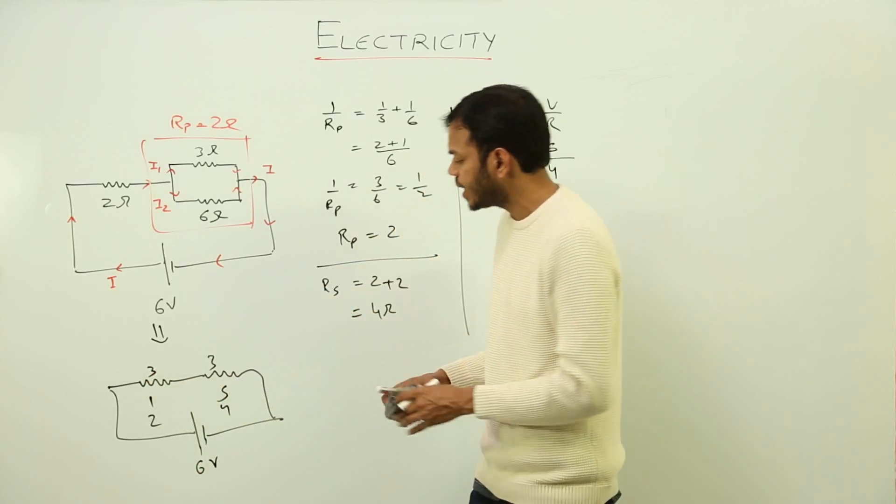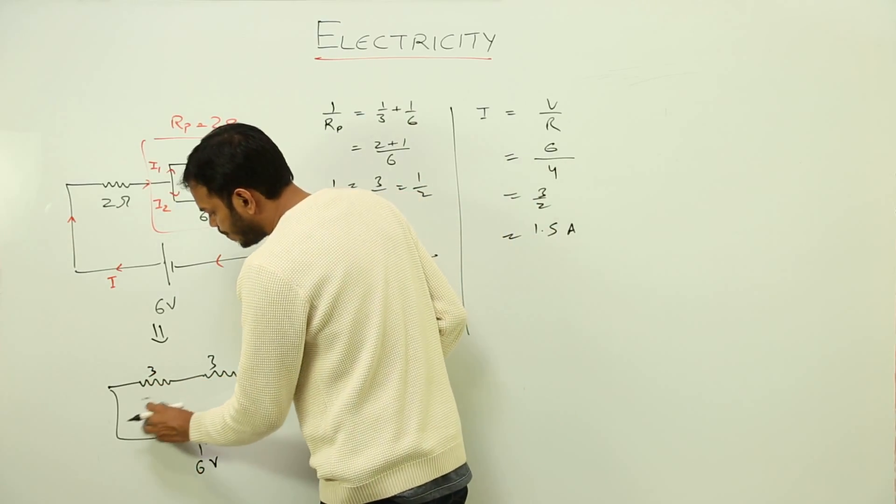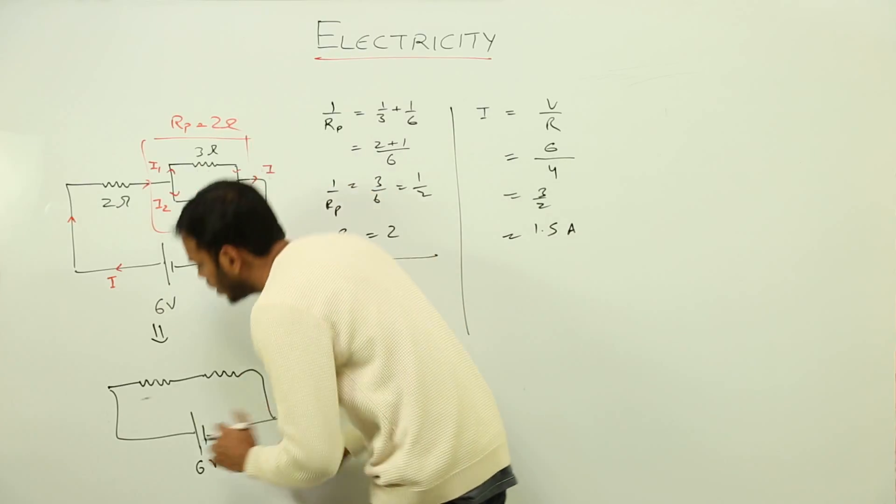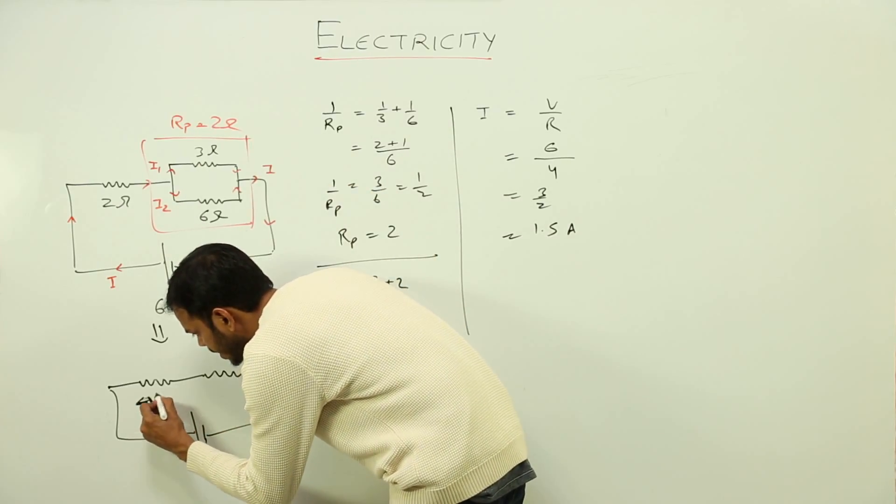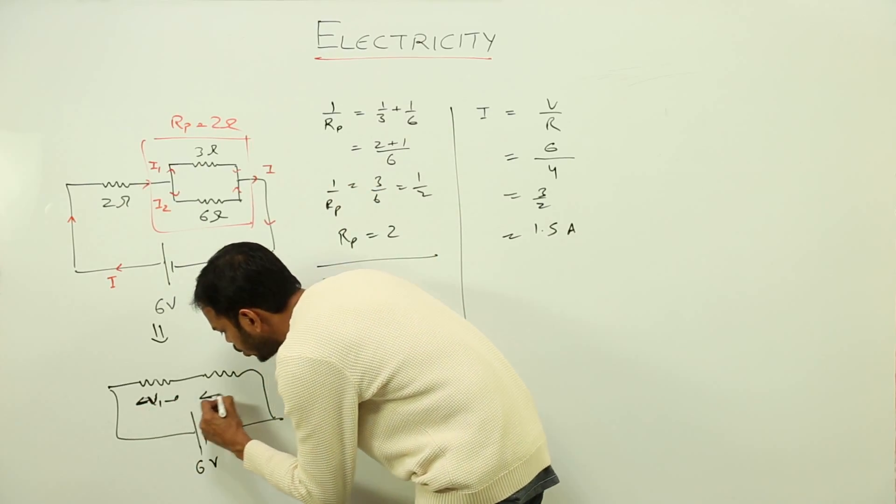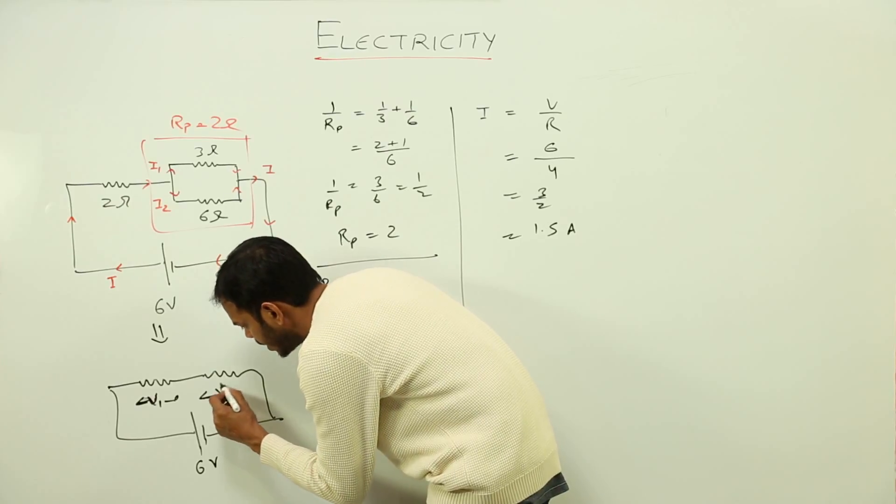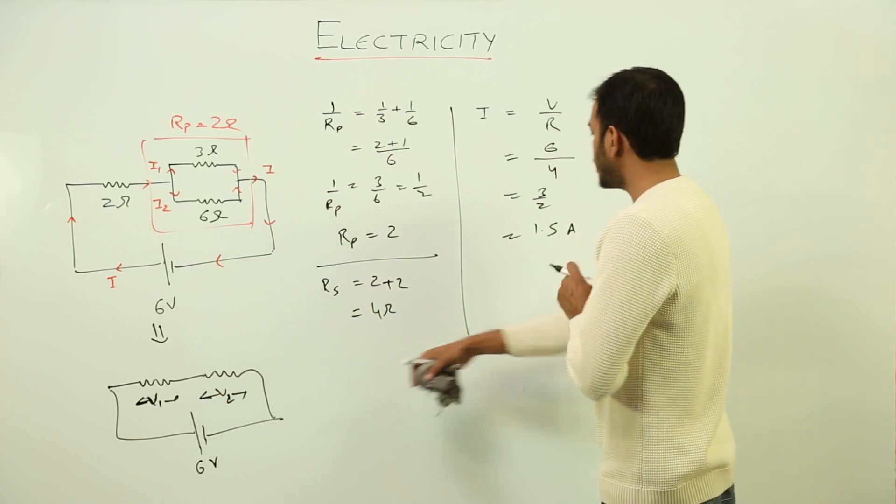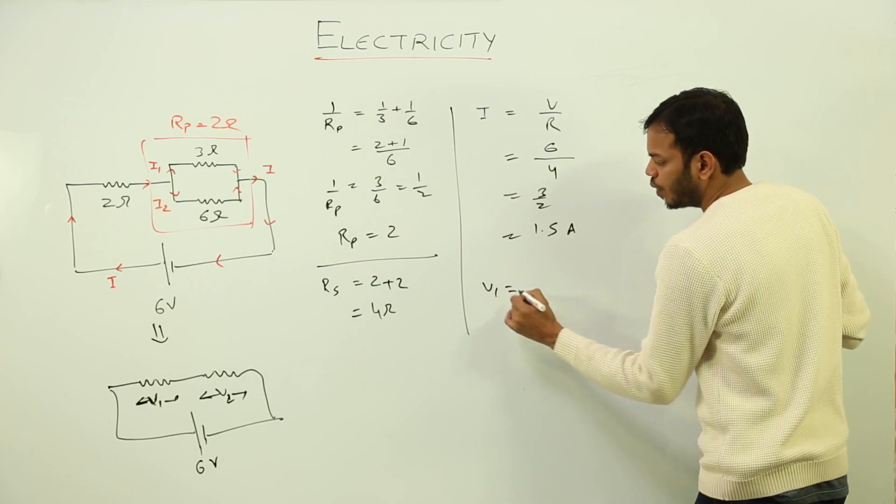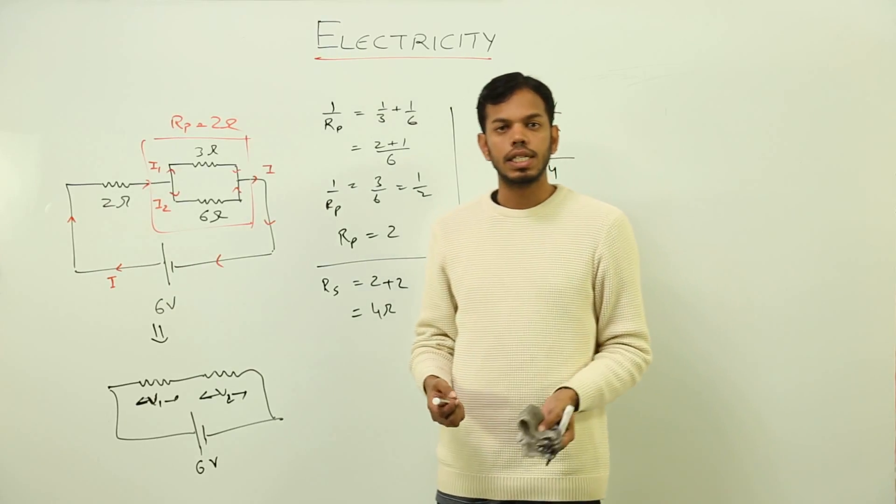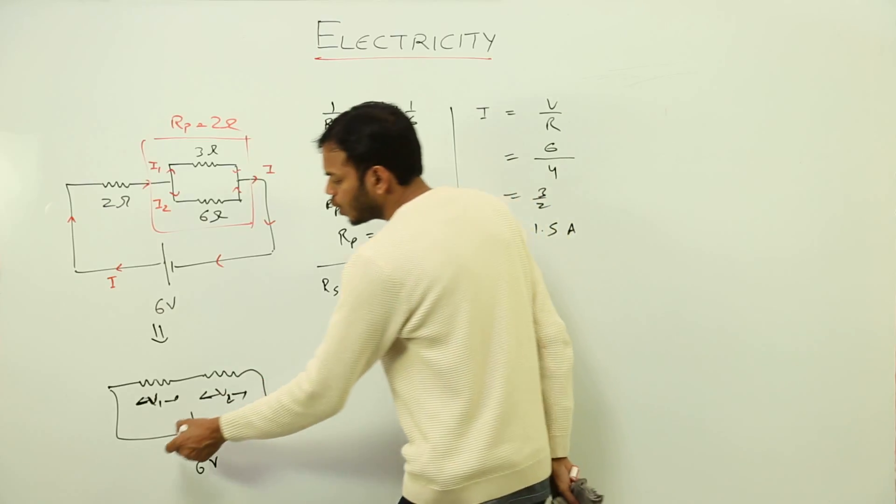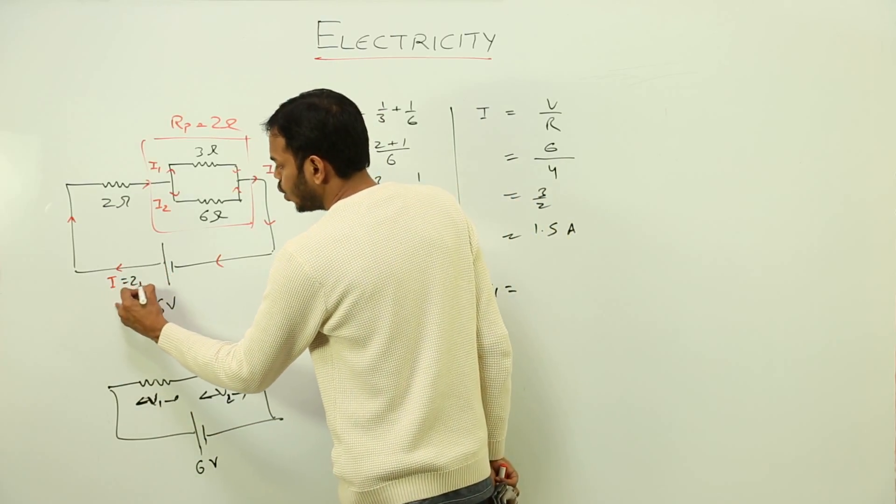They can take any values depending on the value of resistance, but the point is the 6 volts is going to get completely utilized in the circuit. So I am going to calculate what voltage did this resistor take, V1, and I am going to calculate what this resistor took, that is V2.